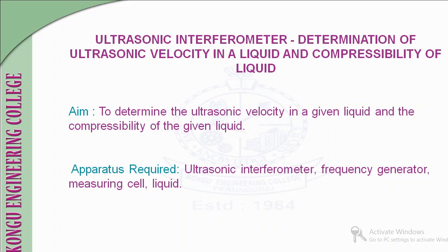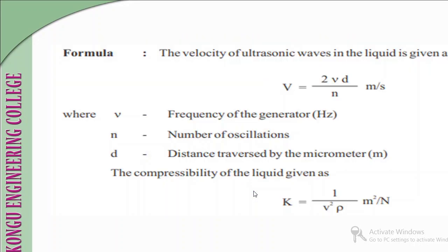The formula used to define the velocity of ultrasonic waves is V = 2νd/n meters per second. Here, 2 is an integer, ν (nu) is the frequency of the generator, d is the distance travelled by the micrometer or the reflector plate, and n is the number of oscillations.